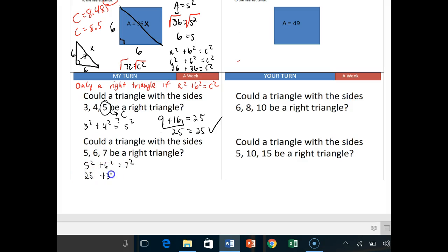So is 25 plus 36 equal to 49? And I can easily tell you that 25 and 36 gives you 61. So is 61 equal to 49? No. This is not a right triangle.